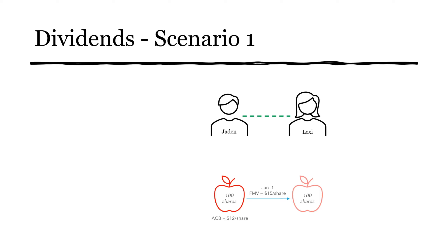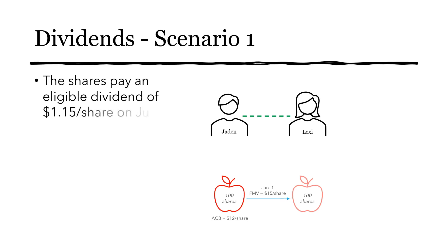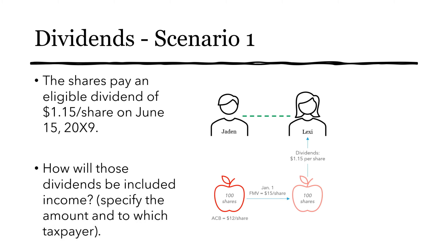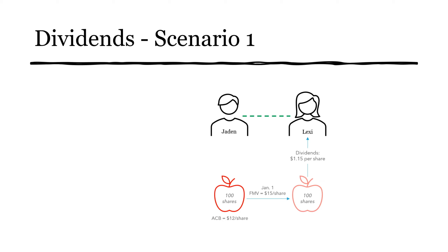Let's consider dividends. Using part of the diagram — Jayden and Lexi are still related, and the transfer of 100 shares still occurs on January 1st when FMV is $15 a share. Let's say the shares pay an eligible dividend of $1.15 a share on June 15th, 20X9. How will those dividends be included in income? The cash received by Lexi is $1.15 × 100 shares = $115.